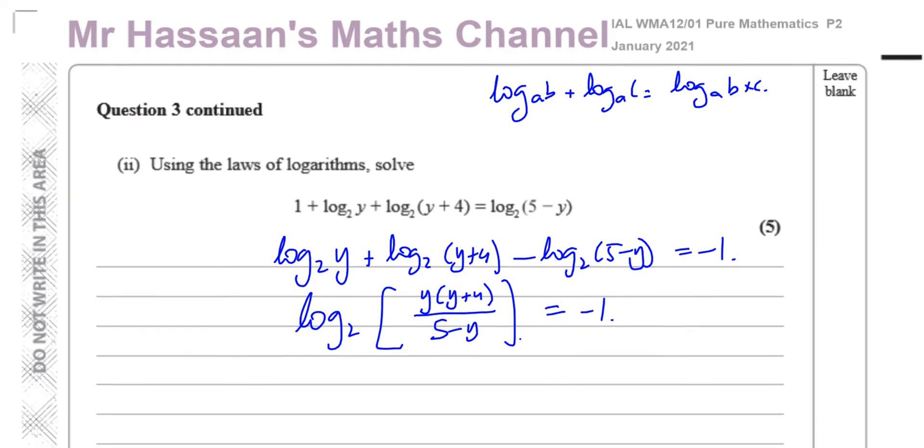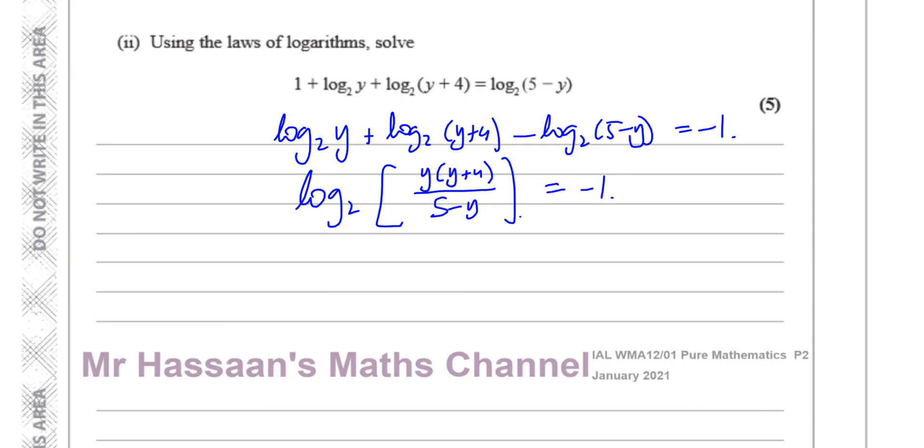Now I've got it in this form. Then I can use the definition of a logarithm, which is log to the base a, b equals c. What it actually means is this is the base, this is the power, this is the answer. So it means a to the power of c equals b. So if I apply this to here, this is the base, which is 2. This is the power, which is minus 1. And that's equal to this, which is y times y plus 4 over 5 minus y.